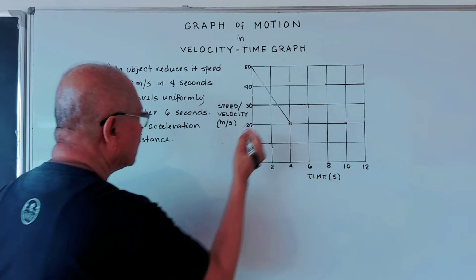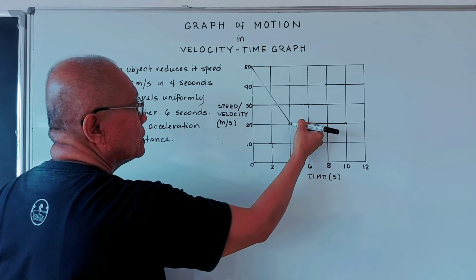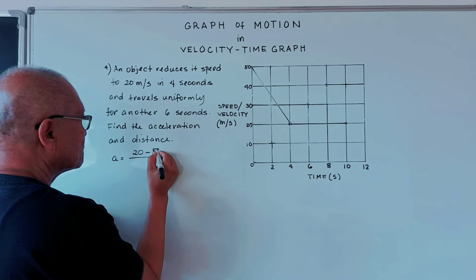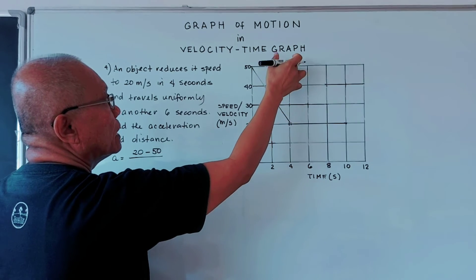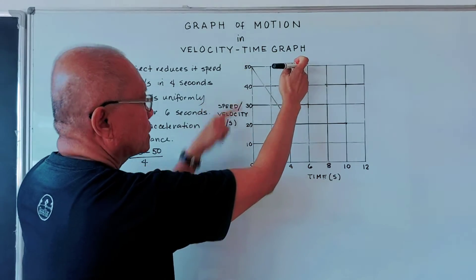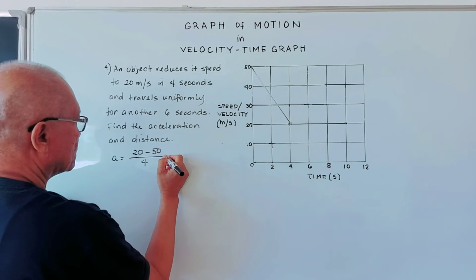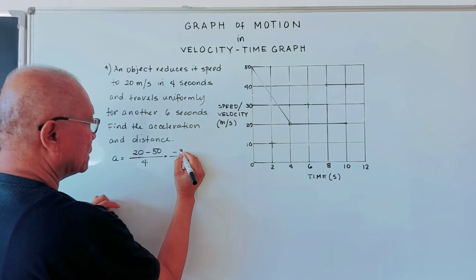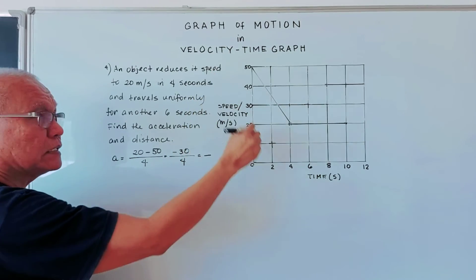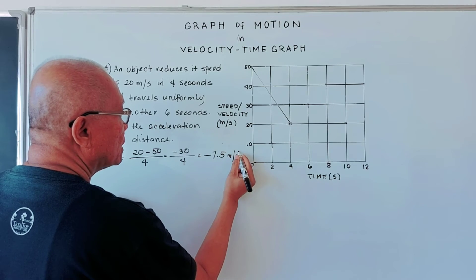For the acceleration of the slanting line, we get the slope using the triangle. The rise is 20 minus 50, and the run is 4 minus 0. So acceleration equals 20 minus 50 over 4, which is negative 30 over 4, giving us negative 7.5 meters per second squared. The negative sign means the speed is decreasing — this is deceleration.